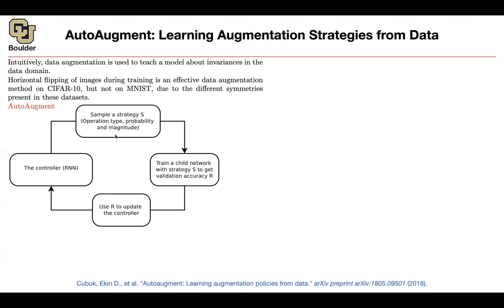The algorithm is the same as before. You have a controller RNN, which is going to give you a strategy for your augmentation. This RNN is going to select between a bunch of operation types, with what probability you're going to choose that operation, and what should be the magnitude of that operation. You select that, you train your neural network using this data augmentation, you get an accuracy, and then you keep updating your controller. What is the search space of all possible data augmentations?